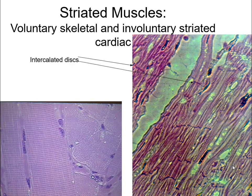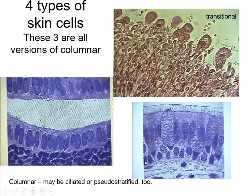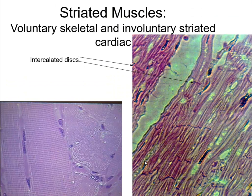Striated muscle is very easy to identify. You have two kinds: on the left is voluntary or skeletal muscle and you can easily see the lines, with the nucleus squished over to the side. On the right is heart muscle — it looks similar except you can see little lines where it looks like someone has rubber-banded fibers together. These are intercalated discs, which cause all the fibers to interact so the whole heart beats at the same time instead of a few fibers here and there.